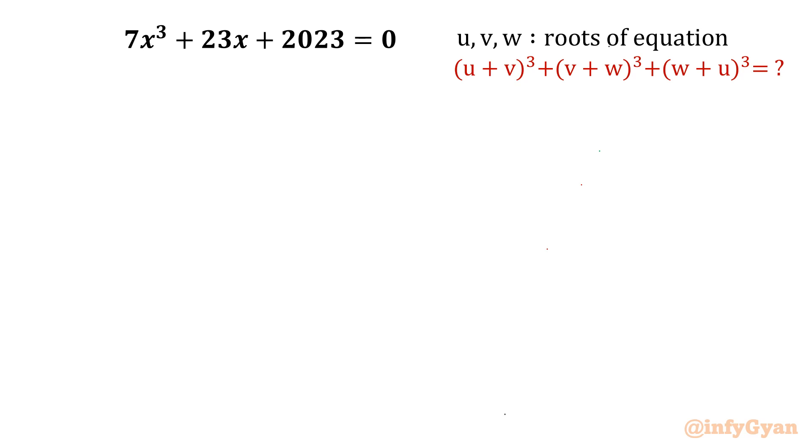Hello everyone, welcome to InfiGal in this very exciting video of algebraic challenging equations and expressions. The equation is the cubic polynomial 7x³ + 23x + 2023 = 0, and the expression we have to find out is (u+v)³ + (v+w)³ + (w+u)³.